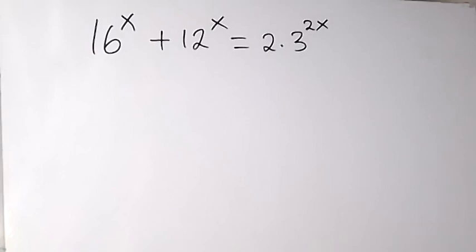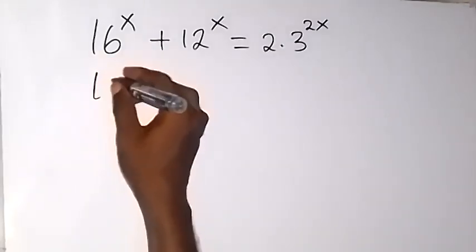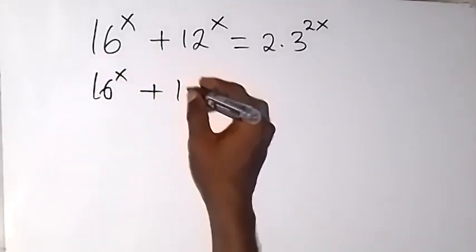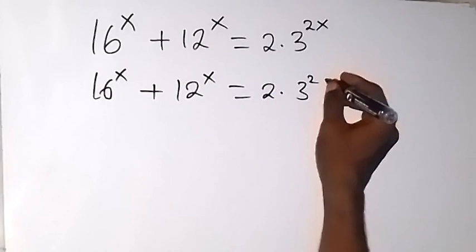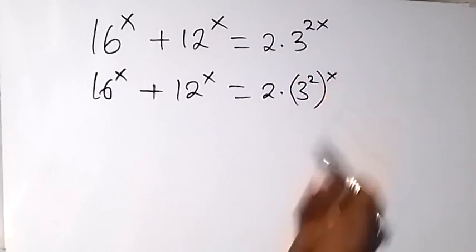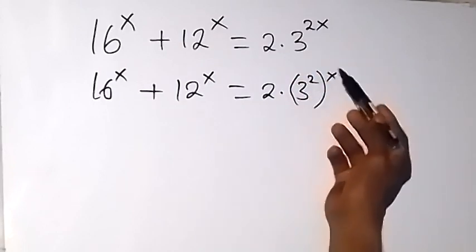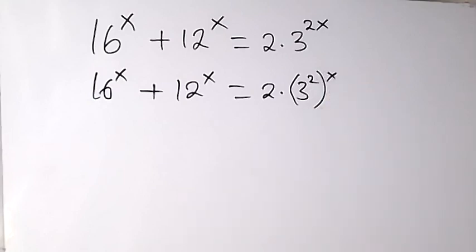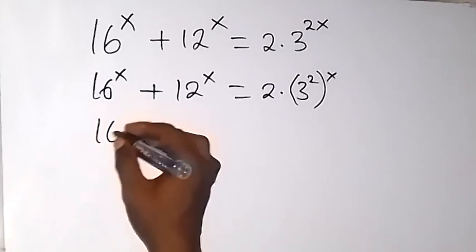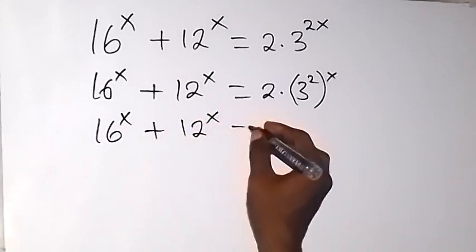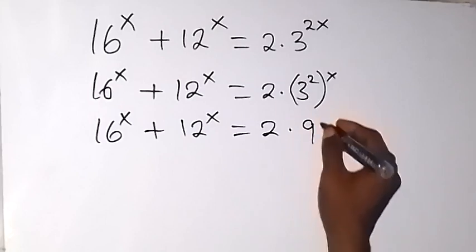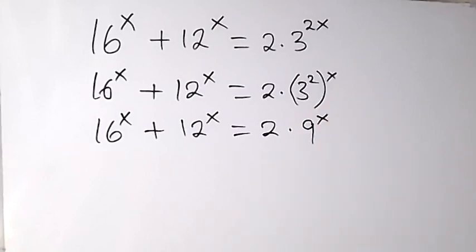We can rewrite this and say this is 16 raised to power x plus 12 raised to power x equals to 2 times 3 raised to power 2, then raised to power x. We can separate this power by taking x out from the law of indices, which will become 16 raised to power x plus 12 raised to power x equal to 2 multiplied by 9 raised to power x — writing 3 raised to power 2 as 9, then raised to power x.